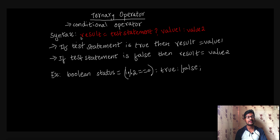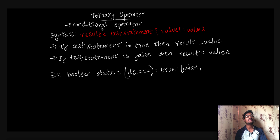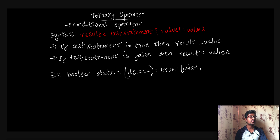The syntax is: result is equal to a condition. If the condition executes a true statement, it will be set in the result. If the true statement is true, result is equal to value 1. If the false statement is true, result is equal to value 2.